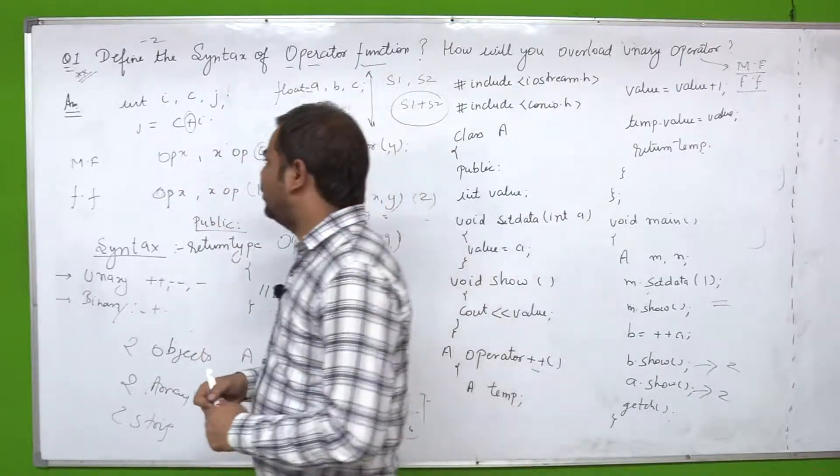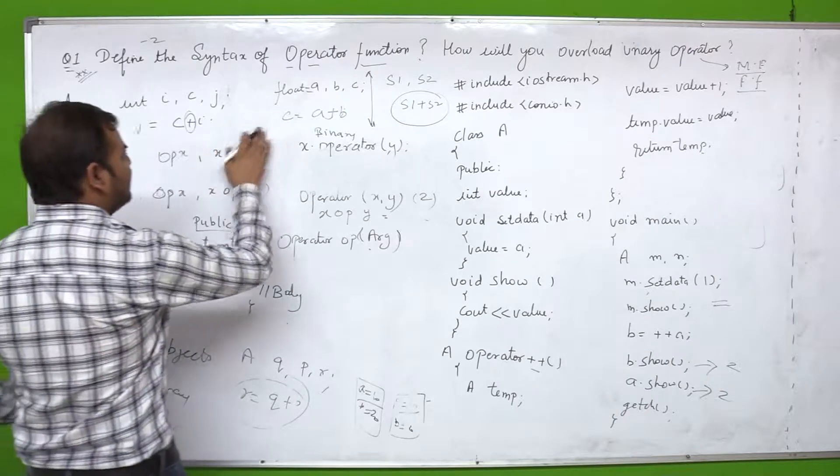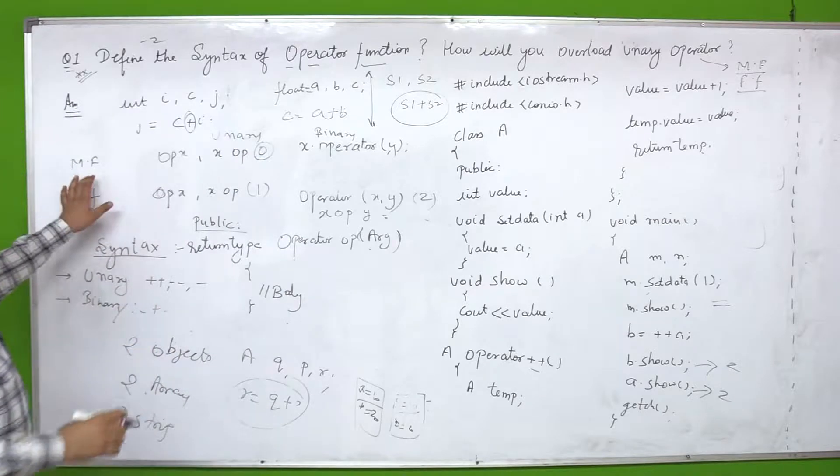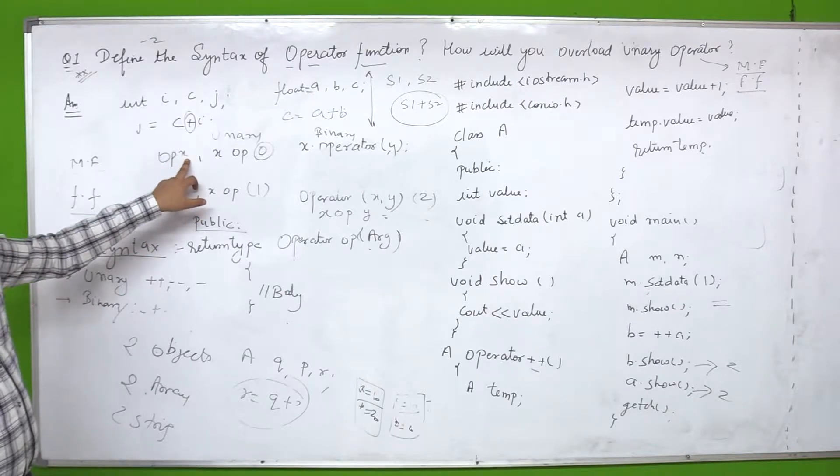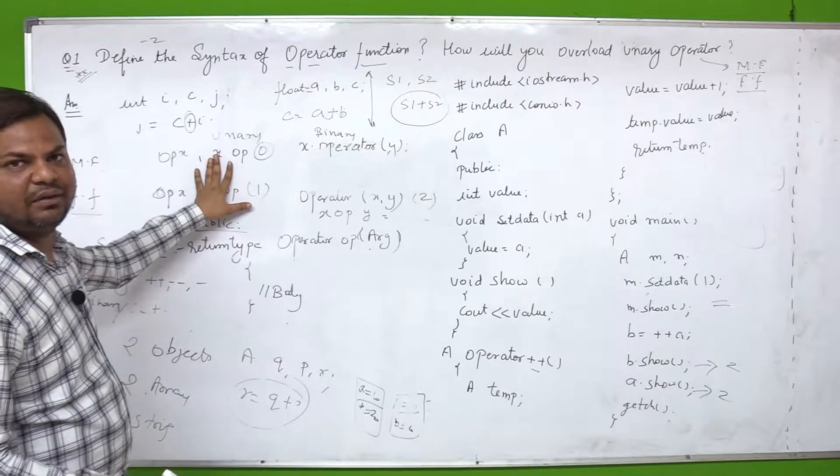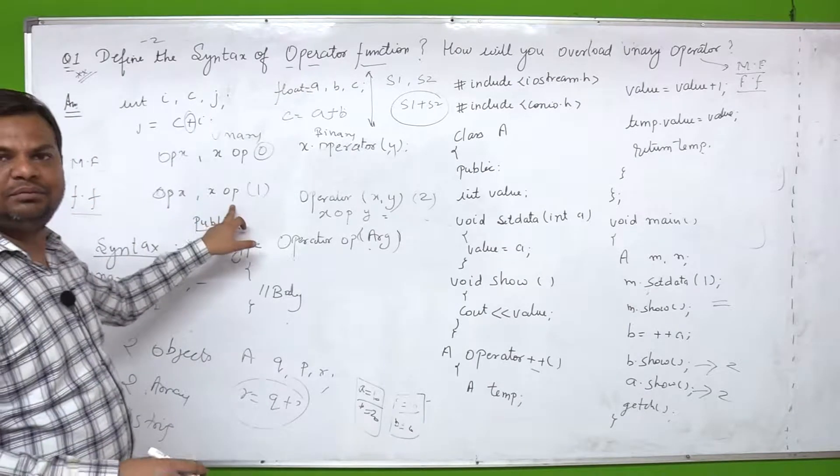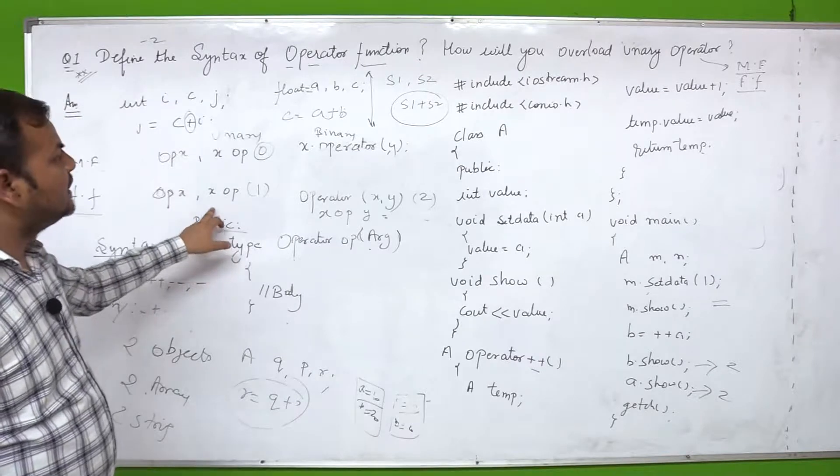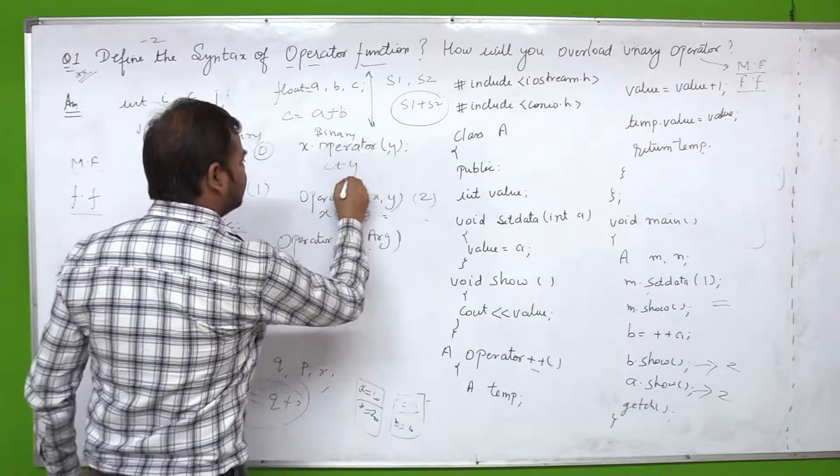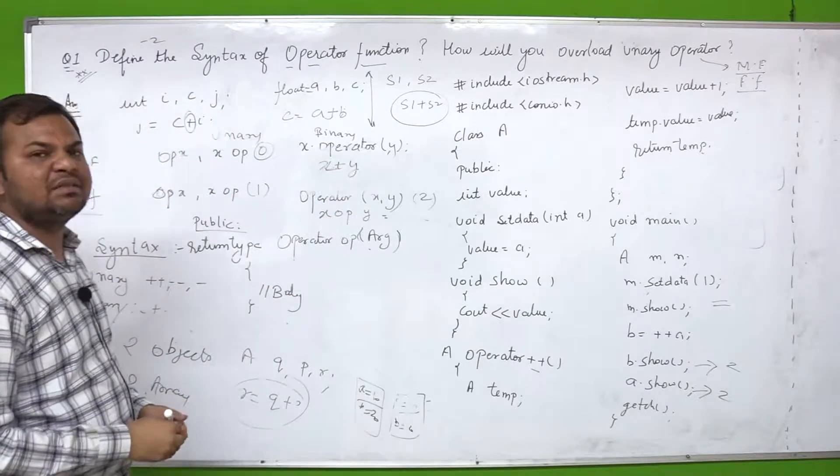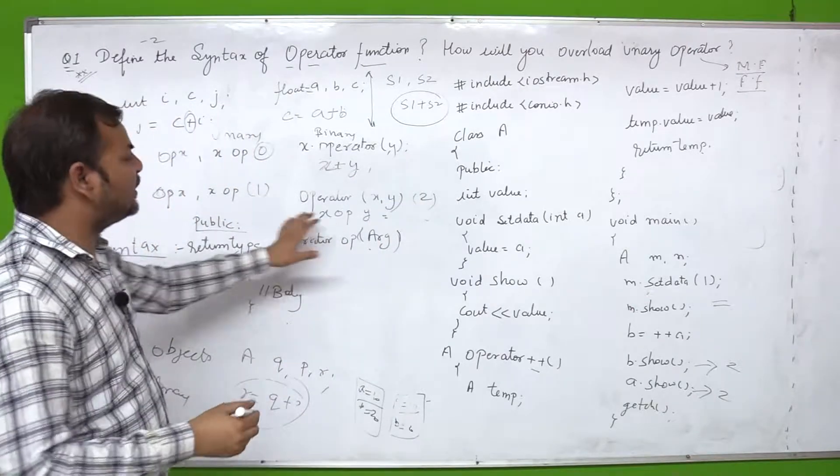Now when you do operator overloading, it can be done through two ways - member function through and friend function through. So first we talk about syntax when we talk about member function through unary operator overloading. We use op x, op means operator and then object name, or x op where x is my object.